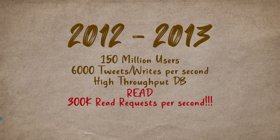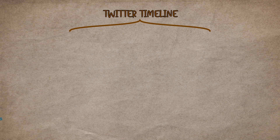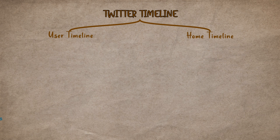So how did Twitter solve their scaling issue? Twitter has two timelines: a user timeline and a home timeline.